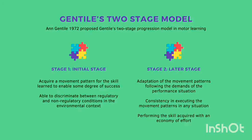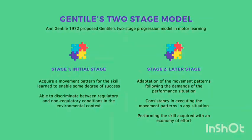The next model in the stages of motor learning is Gentile's two-stage model. In 1972, Anne Gentile proposed the Gentile's two-stage progression model in motor learning. Stage one is the initial stage, and it has two goals: first, to acquire a movement pattern for the skill learned to enable some degree of success; and second, to be able to discriminate between regulatory and non-regulatory conditions in the environmental context. Stage two is the later stage, and it has three goals: adaptation of the movement patterns following the demands of the performance situation, consistency in executing the movement patterns in a new situation, and performing the skills acquired with an economy of effort.